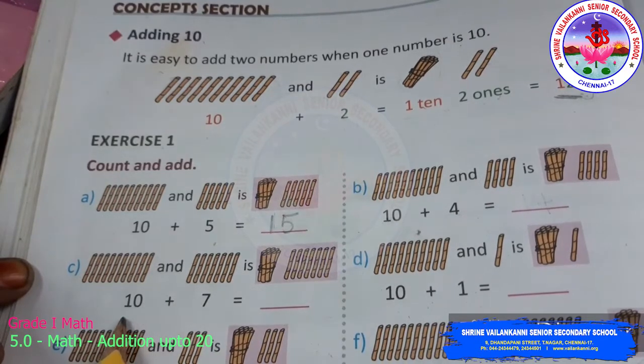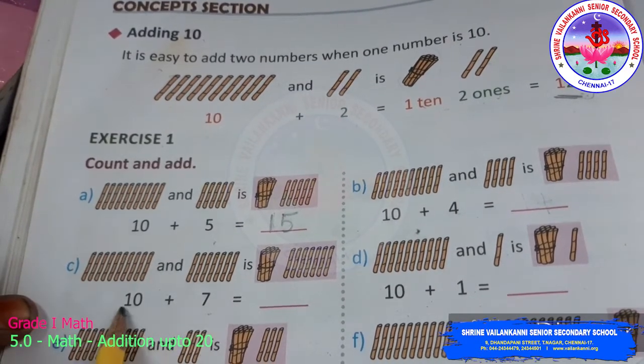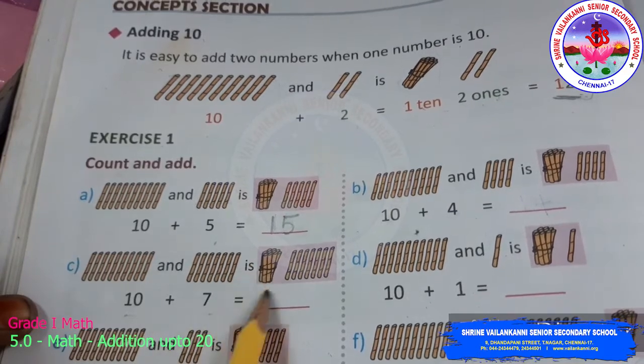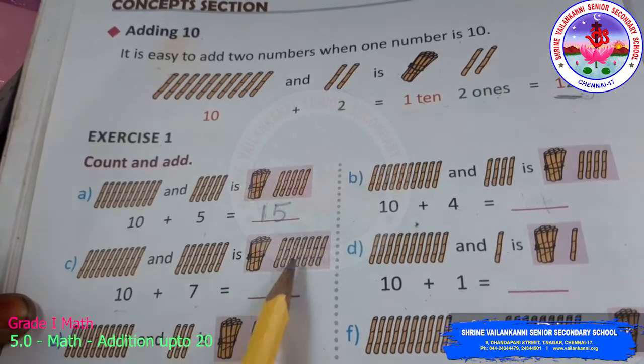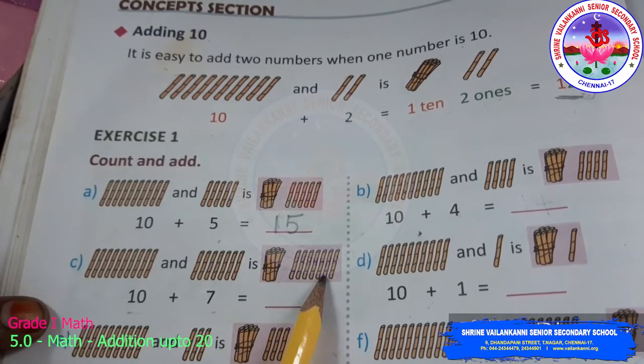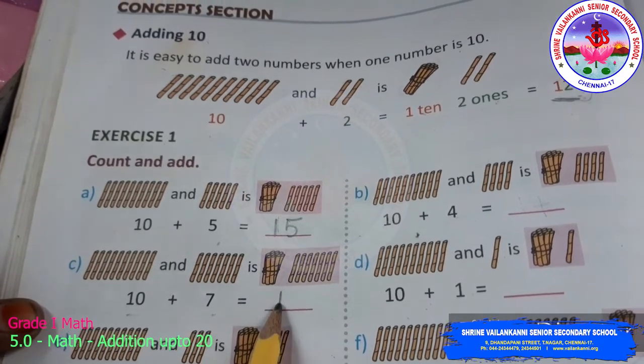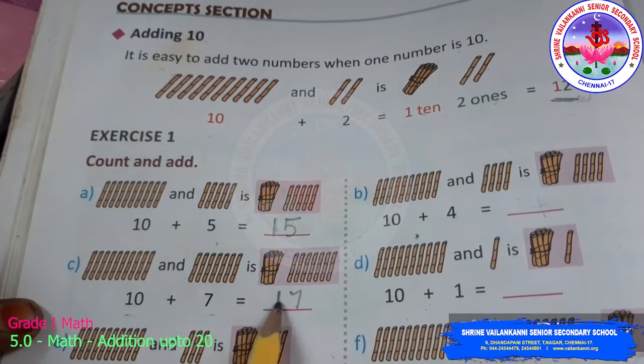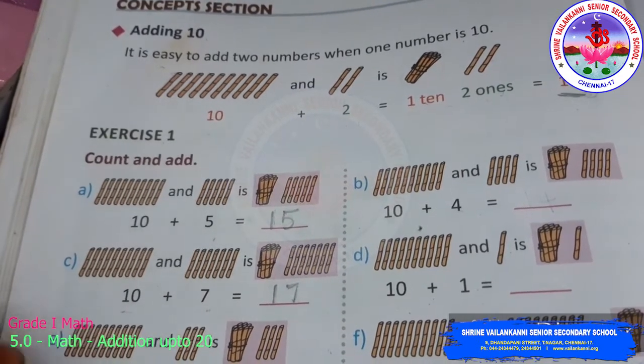Now, we will add 10 plus 7. So 10 plus 7, bundling up. After 10, 11, 12, 13, 14, 15, 16, 17. It is really very easy. You can try the other sums as homework.